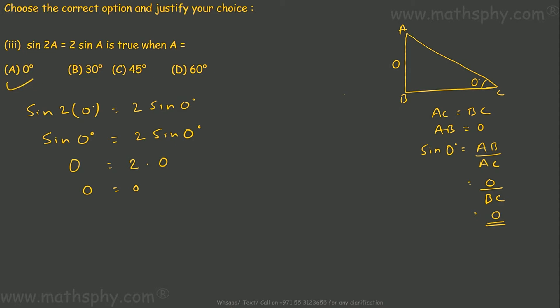So sine 2a equals 2 sine a is true when a is 0 degree. I have made one of the videos where I have explained 45, 30, 60, 0 and 90 degree angles for these ratios. Please refer to that video to understand this concept.